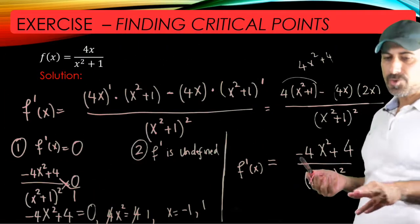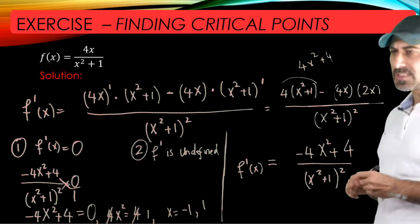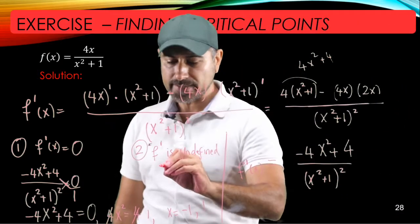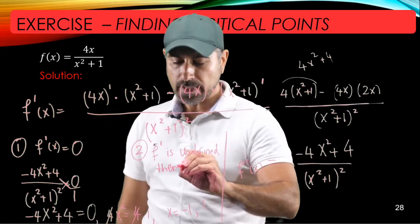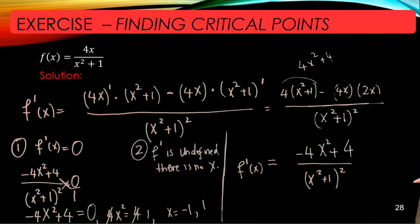So there's no way that you have an x that makes the bottom of the quotient 0. So basically for this problem there's no x. In other words, f prime is defined for every single x.